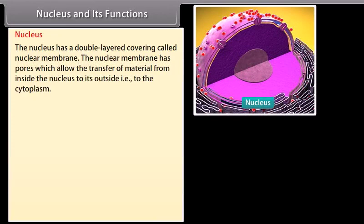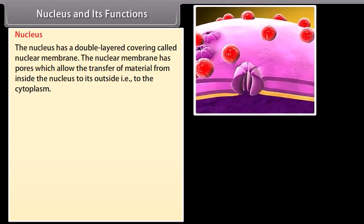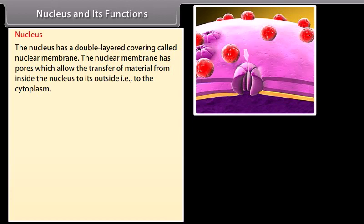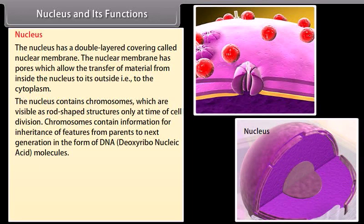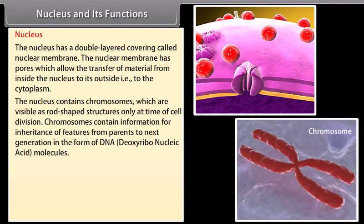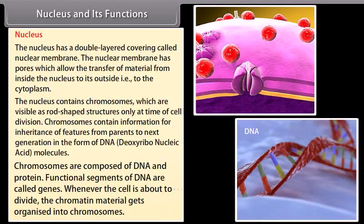The nucleus has a double-layer covering called the nuclear membrane. The nuclear membrane has pores which allow the transfer of material from inside the nucleus to the cytoplasm. The nucleus contains chromosomes, which are visible as rod-shaped structures only at the time of cell division. Chromosomes contain information for inheritance of features from parents to the next generation in the form of DNA — deoxyribonucleic acid molecules.